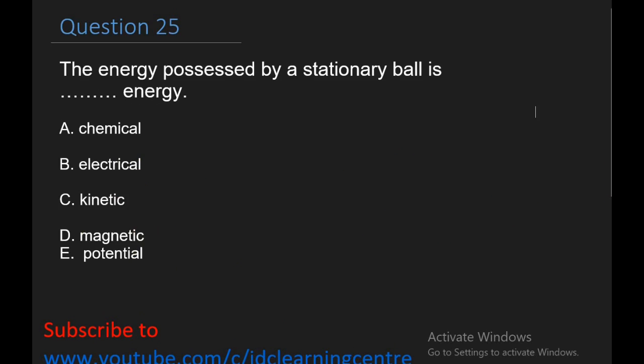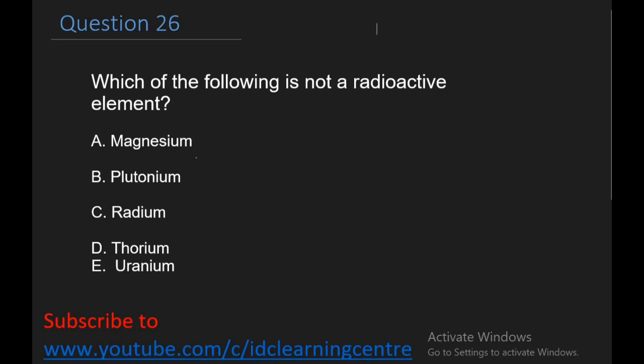Let's look at the next question. Question 25: The energy possessed by a stationary ball is dash energy. A. Chemical, B. Electrical, C. Kinetic, D. Magnetic, E. Potential. The right answer is E, potential energy. Question 26: Which of the following is not a radioactive element? Magnesium, Plutonium, Radium, Thorium, or Uranium. The right answer is magnesium. It is not a radioactive element.